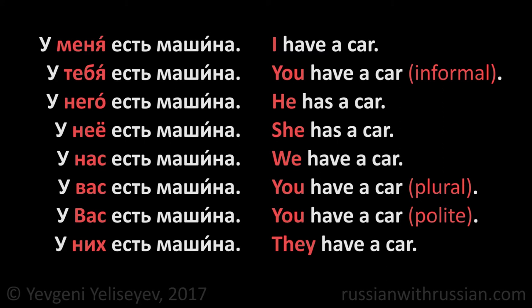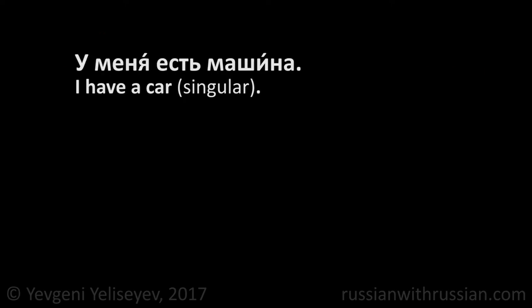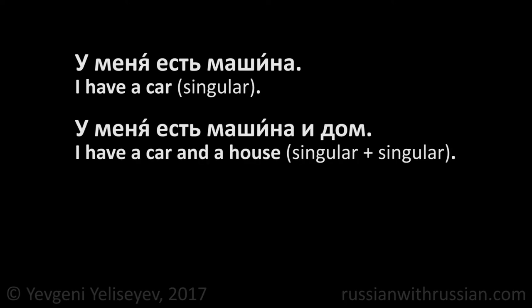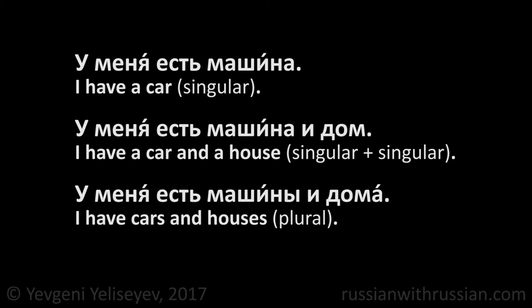We use the form есть regardless of the quantity of objects that we have. Compare, please: у меня есть машина — I have a car; у меня есть машина и дом — I have a car and a house; у меня есть машины и дома — I have cars and houses. In all situations, we use the form есть.